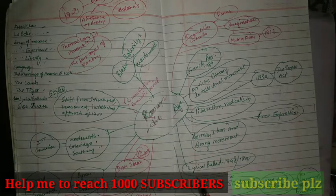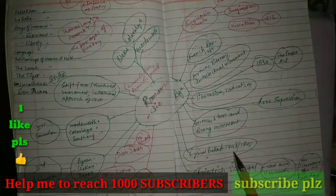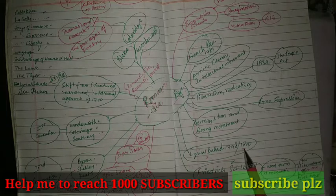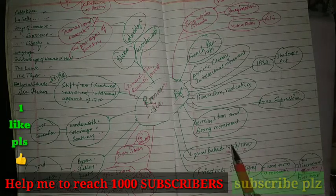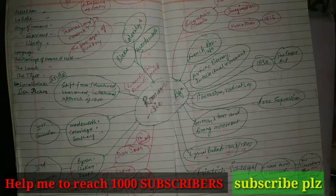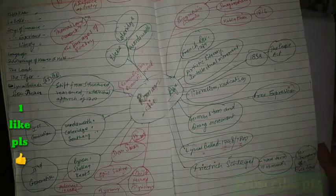Lyrical Ballad - here you can see publication was in 1798 and 1800, the second one, and first one was in 1798. So generally 1798 is considered the starting point of romanticism.